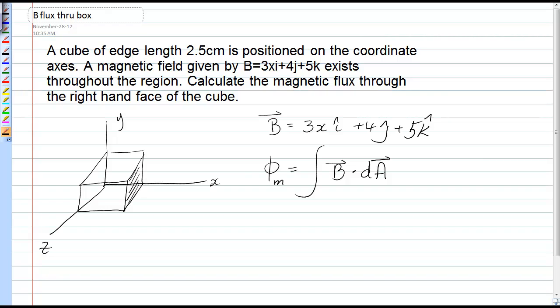Well, let's evaluate the magnetic field on this face. The value of x for that entire face would be 2.5 centimeters. And so the magnetic field everywhere on that face would be 3 times 0.025 meters i hat plus 4j hat plus 5k hat. So in fact, we see that this B is uniform over that face, and we're not going to have to integrate.